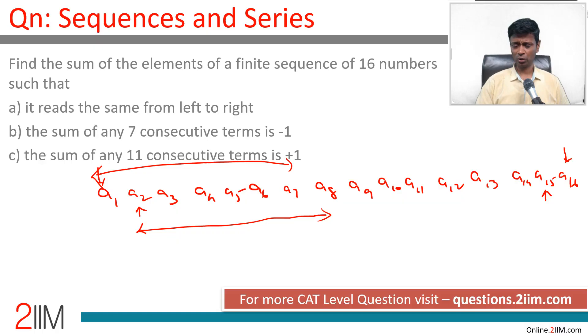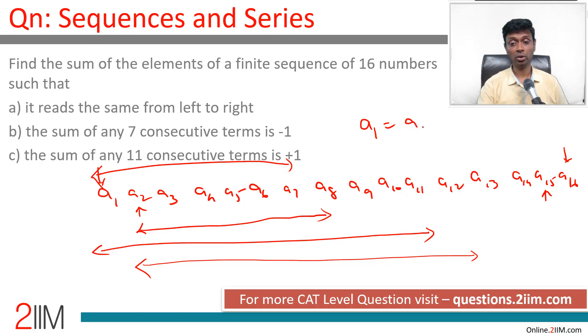Same idea for the second thing. The sum of 11 consecutive terms is 1. So a1 to a11 and a2 to a12 are same. That means a1 is equal to a12. a1 equal to a8, a1 is equal to a12, a1 equal to a16, a8 equal to a9. So bunch of things are equal to a1.